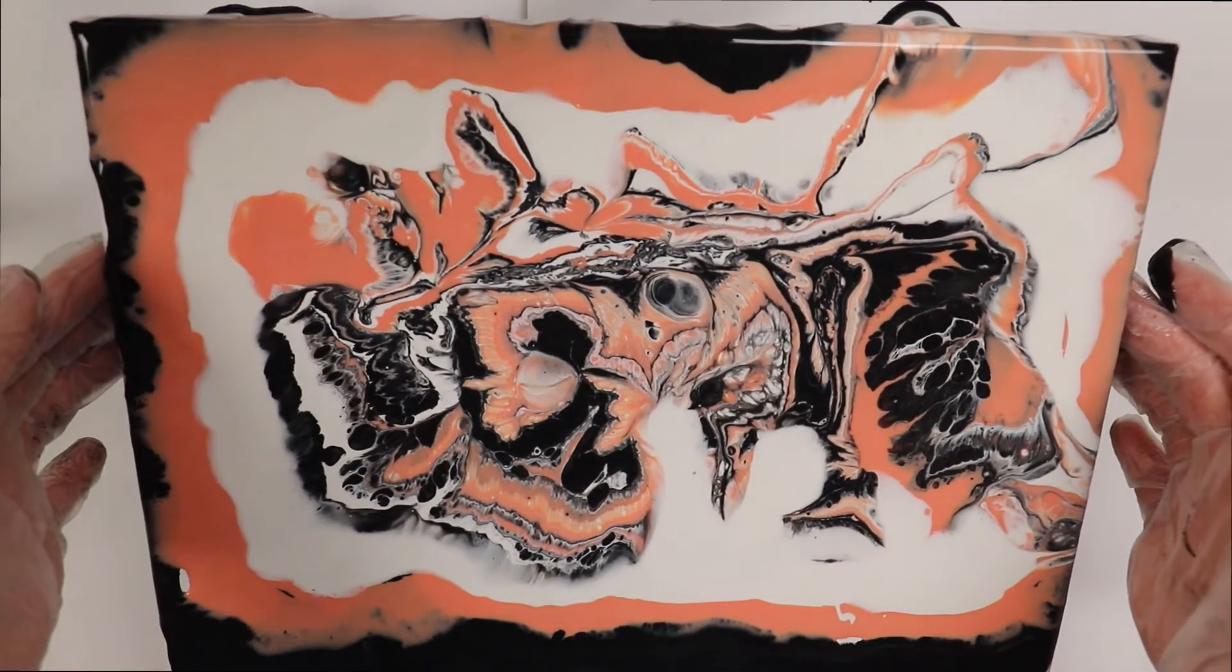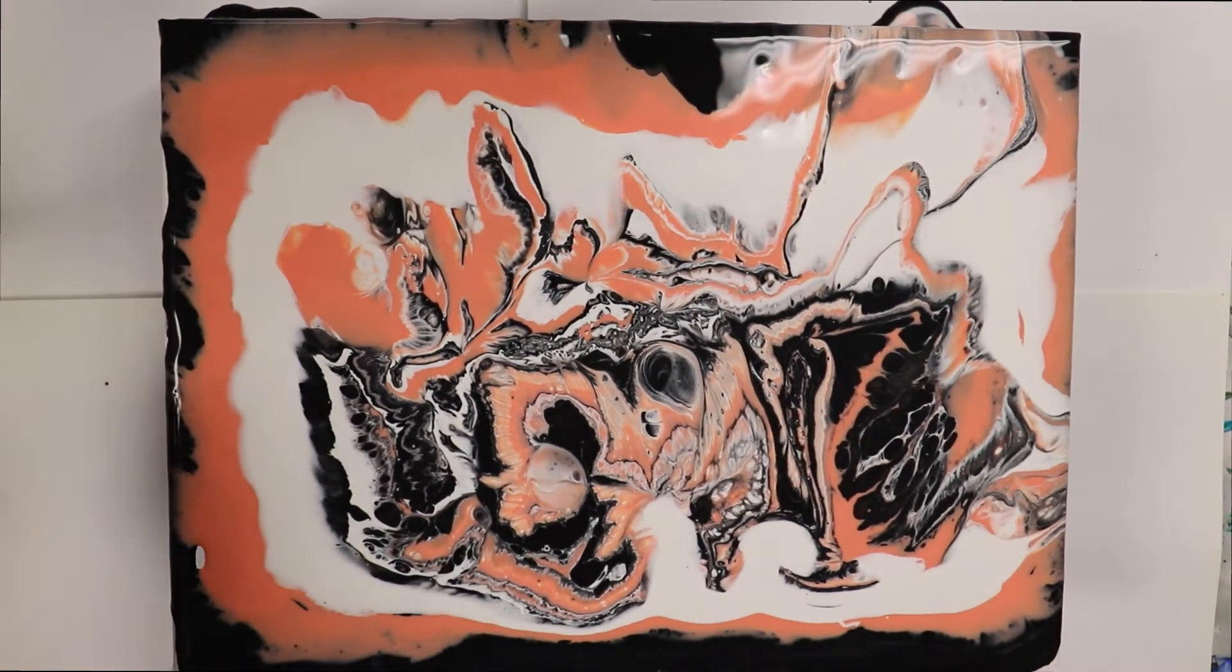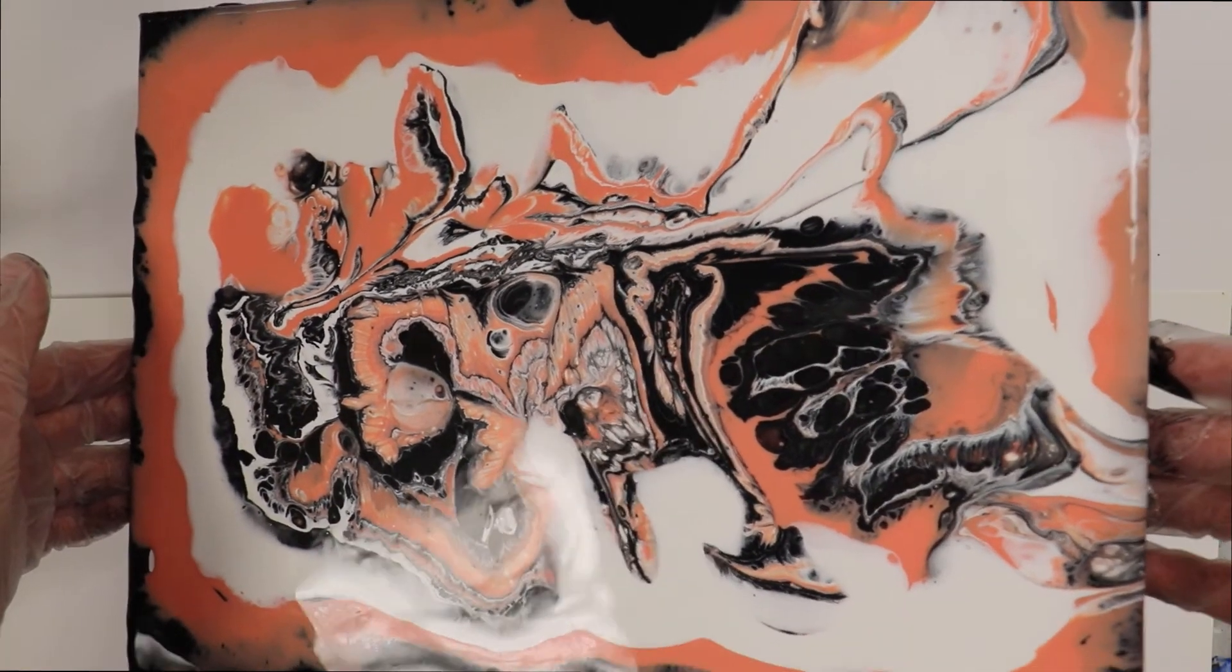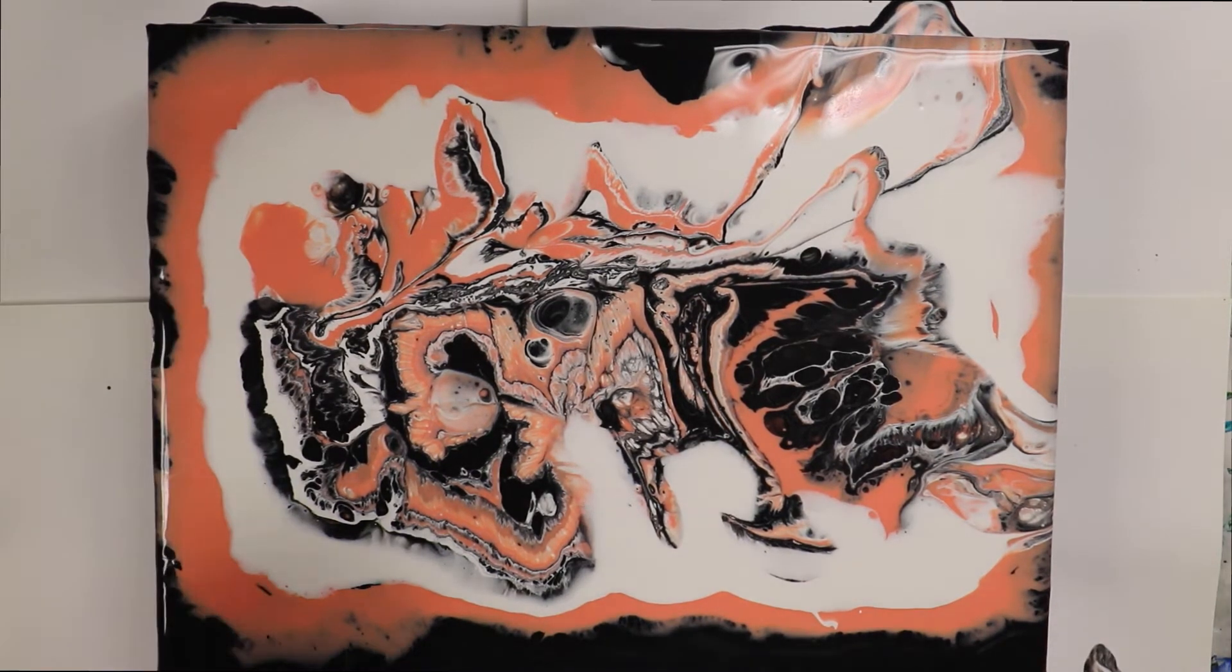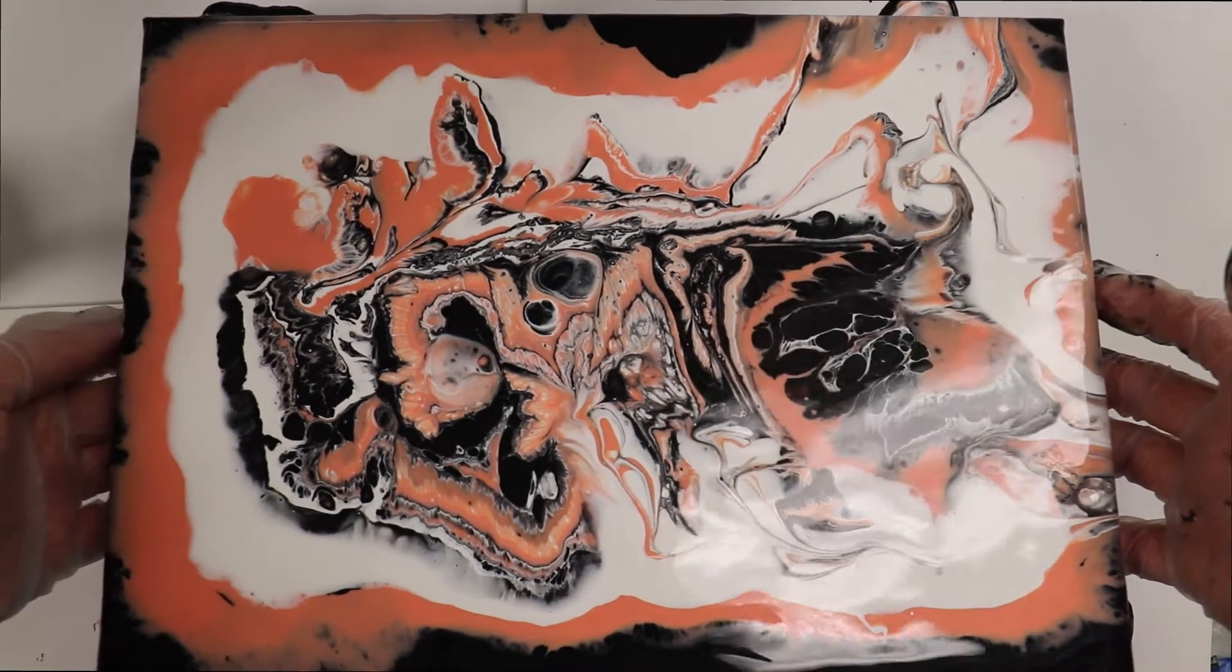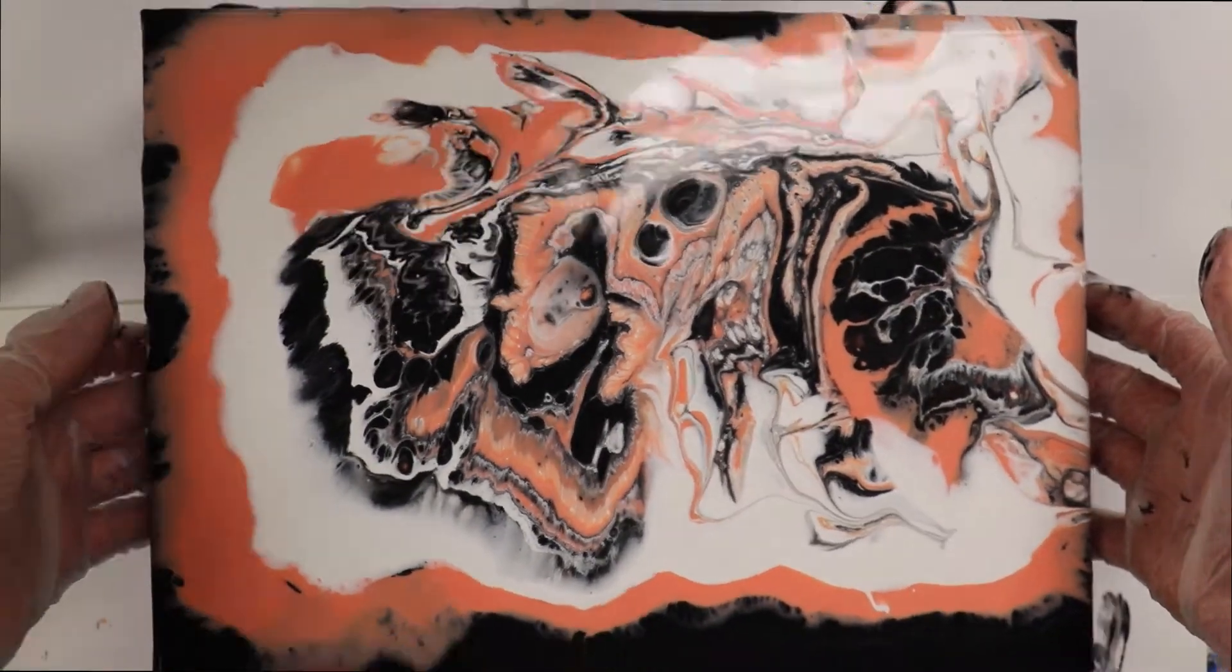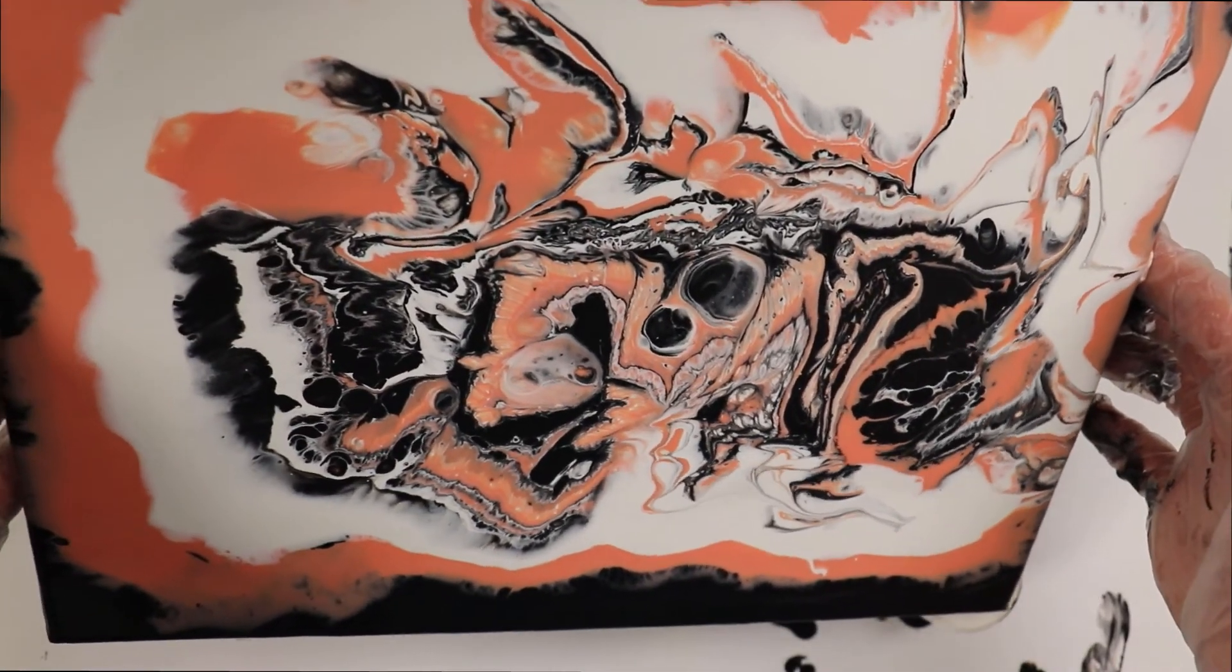And then you can tilt it again if you want. Just play with it a little bit until you're happy with it. Don't play with it too much because your paints might get all kind of mixed and muddy looking. But just play with it until you're happy with it. Do know that it may shift some from when you stop to when it's dried because it's very fluid. So don't get too attached to how it looks right now but be aware that it may change a bit.